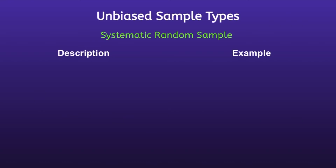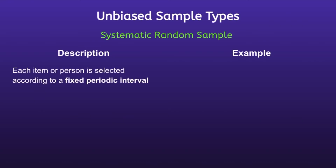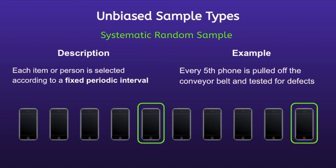Systematic random sample: each item or person is selected according to a fixed periodic interval. For example, every fifth phone is pulled off the conveyor belt and tested for defects. Notice that there is a fixed periodic interval, since every fifth phone is being pulled off the belt and tested.